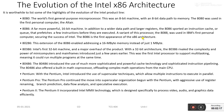The 8086 is the first appearance of the x86 architecture. The 8286, an extension of the 8086, enabled addressing of 16 megabytes of memory instead of just 1 megabyte. The 8286 was not popularly used, but the 8386 was popularly used.